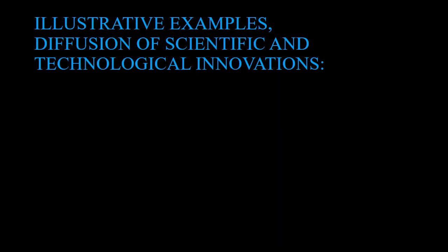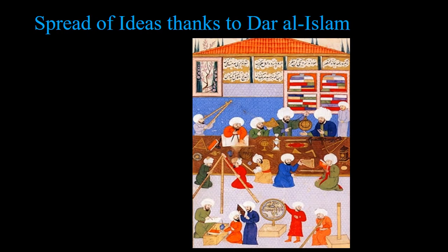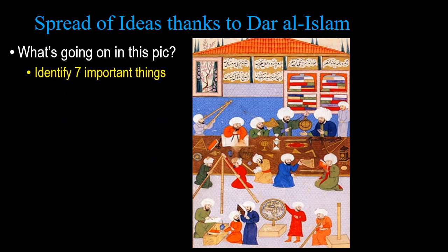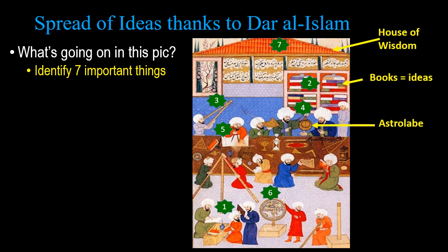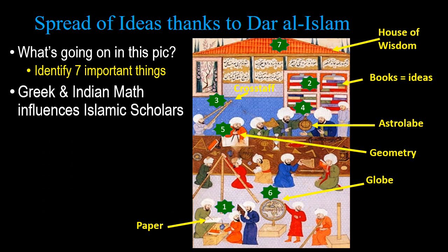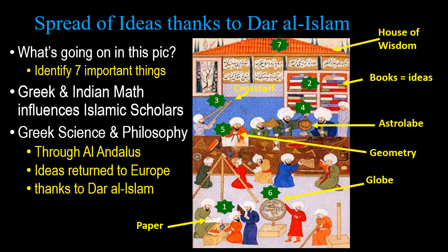Let's look at diffusion of scientific and technological innovations. The spread of knowledge thanks to Dar al-Islam is huge — at the House of Wisdom there were books, ideas, use of the astrolabe, the cross-staff, geometry, a globe, and paper. Greek and Indian mathematics influenced Islamic scholars; ideas the Indians came up with — like decimals, accurate measurements of pi, and what becomes algebra — Muslims took, expanded upon, wrote down, and spread. Greek science and philosophy also moved around, especially through Al-Andalus in Spain.